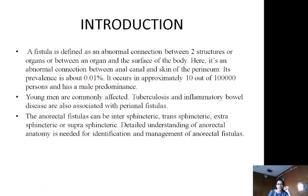Introduction. A fistula is defined as an abnormal connection between two structures or organs, or between an organ and the surface of the body. Here, it is an abnormal connection between the anal canal and the skin of the perineum. Young men are commonly affected. Tuberculosis and inflammatory bowel disease are also associated with perianal fistulas.